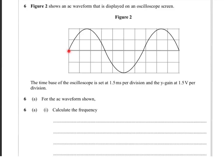And that has taken 1, 2, 3, 4, 5, 6, 7, 8, 9, 10 squares. Okay, so we've got 10 squares, each representing 1.5 milliseconds. So that gives us a total time of 15 milliseconds.